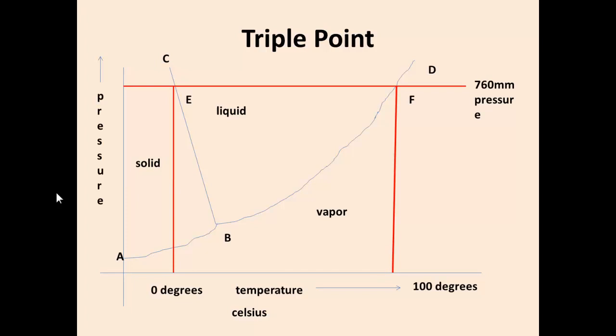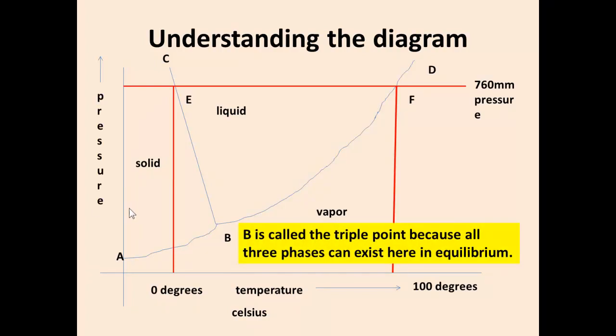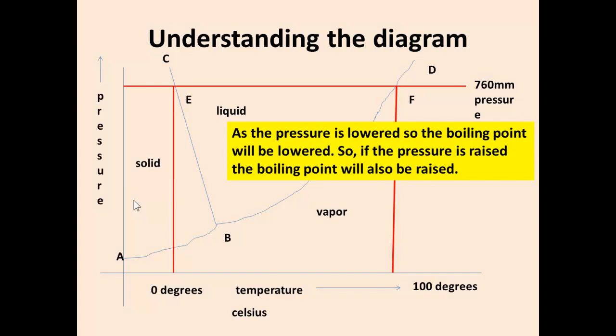We can put this information on a diagram called the triple point diagram. To understand this diagram, B is called the triple point because all three phases can exist here in equilibrium: solid, liquid, and vapor. As the pressure is lowered, the boiling point will be lowered. If the pressure is raised, the boiling point will also be raised.